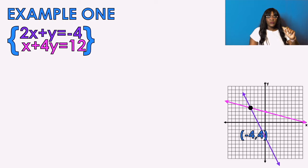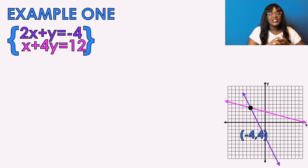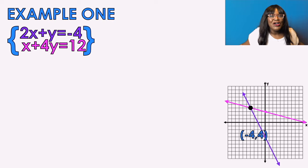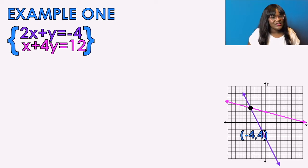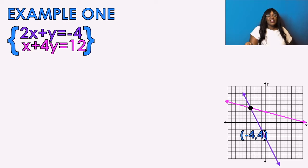Let's do example number one, which is the same example from my last video on graphing systems. I already gave you the answer. With my students, I always give the answers because I need to know if you know how to do the problem — I don't want to know if you just know the answer. Photomath can tell you the answer; I want to know if you can get the answer. Looking at the graph, I want to know where these two lines meet. This graph tells me those two lines meet at negative 4, 4.